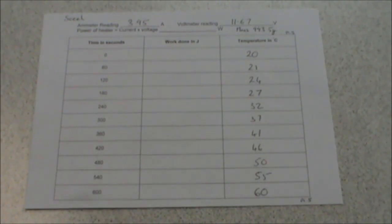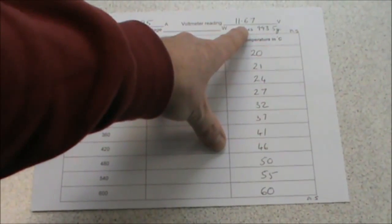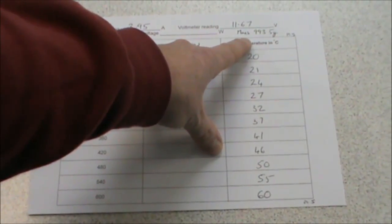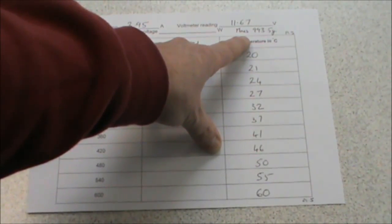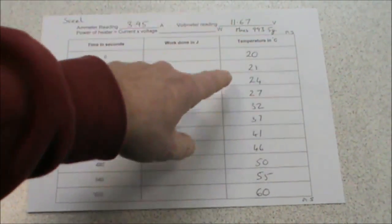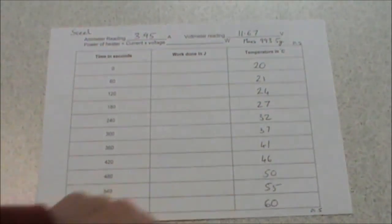These are the results for the steel. An ammeter reading of 3.95 amps, a voltmeter reading of 11.67, and a mass of 993.5 grams. These are the temperature readings that you need to fill in to your results table.